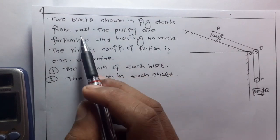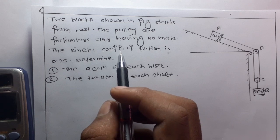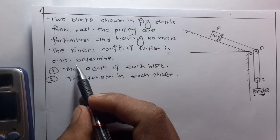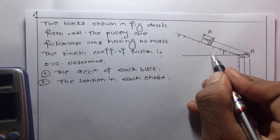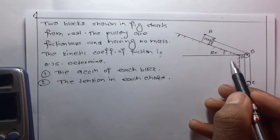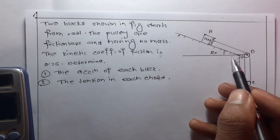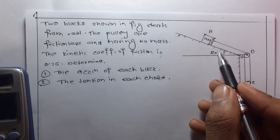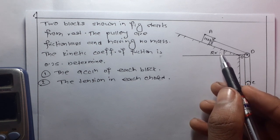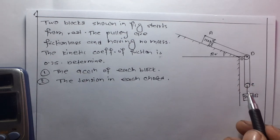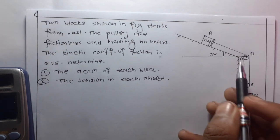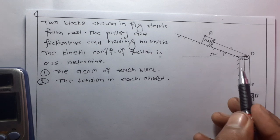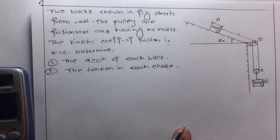The question shows two blocks as in the figure, starting from rest. The pulleys are frictionless and have no mass. The kinetic coefficient of friction is 0.25. Block A is on an inclined plane at a 20 degree angle with a coefficient of friction of 0.35, and Block B has a mass of 350 kg. We need to find the tension in each chord and the acceleration of Block A and Block B.